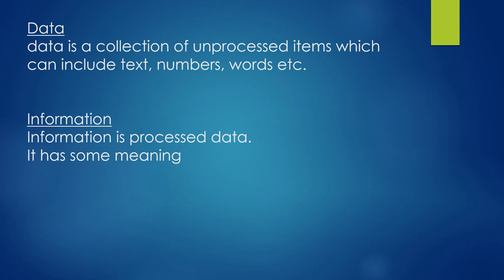What is the definition of information? Information is processed data. We give data to the computer, and after processing the data we get the information. So, information is processed data that has some meaning.